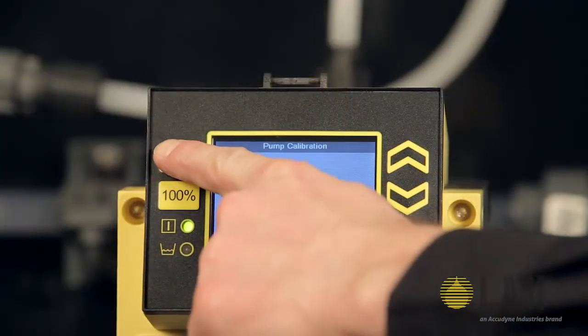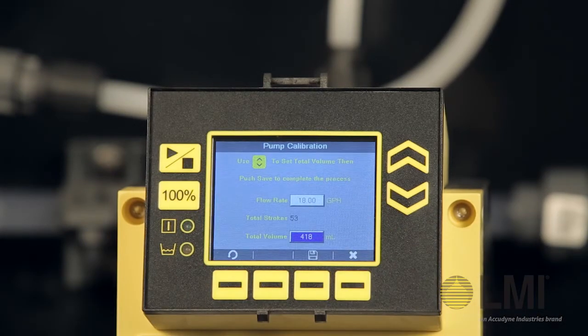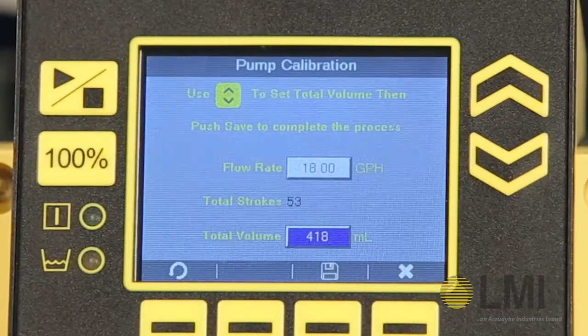Once the fluid level approaches the bottom of the scale on the column, stop the pump before the level goes below the scale. Note, pumping a complete cylinder allows for a more accurate calibration.